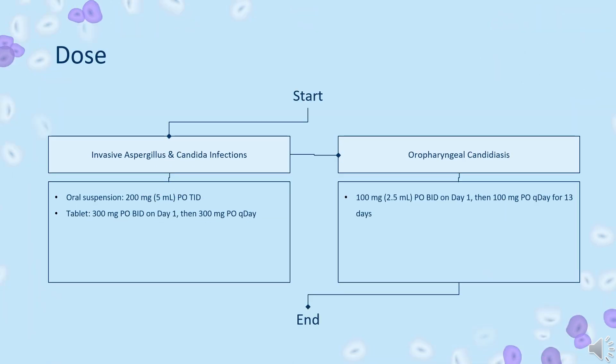For prophylaxis of invasive Aspergillus and Candida infections in severely immunocompromised patients — such as hematopoietic stem cell transplant recipients with GVHD or hematologic malignancies with prolonged neutropenia from chemotherapy — the oral suspension dose is 200 mg (5 ml) three times daily. The delayed-release tablet dose is 300 mg twice daily on day 1, then 300 mg once daily thereafter. Duration of therapy is based on recovery from neutropenia or immunosuppression.